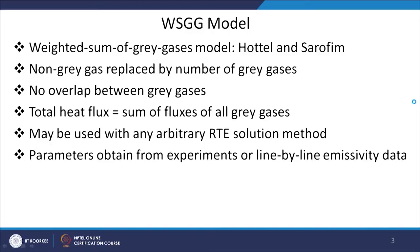We represent the non-gray absorption coefficient by a number of gray gases with constant absorption coefficient. The key aspect of this method is that the parameters used in the WSGG model are obtained either from experiments — as was done in wideband and narrowband models — or from line-by-line emissivity data. This method is very powerful and is one of the most preferred methods in radiative transfer solution. Data for this type of model is available in many commercial codes like ANSYS and Star-CCM+.